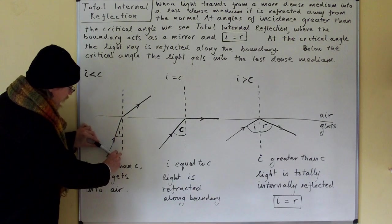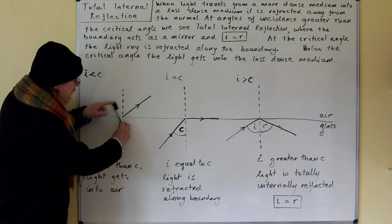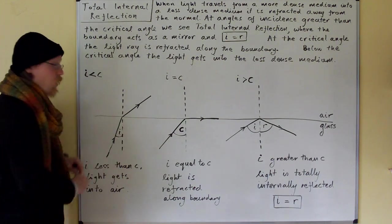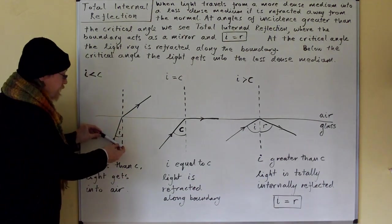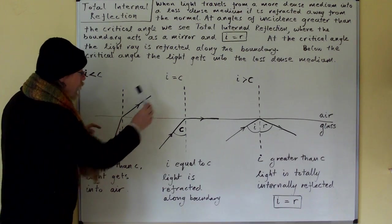Now as this wavefront comes in, this bit gets out first so it speeds up and this tends to bend the light ray away from the normal. Here comes the wavefront, it gets into the air, it speeds up and so it's bent away from normal.